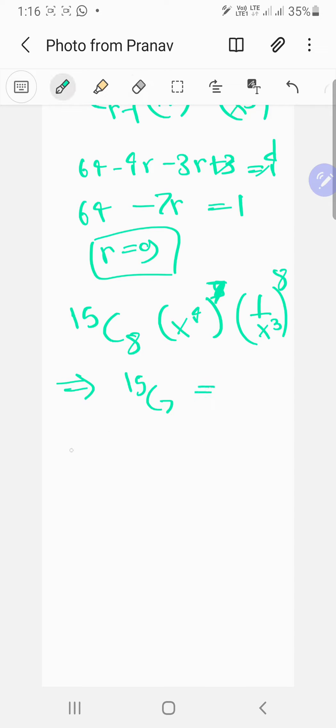So that's gonna be equal to (15 × 14 × 13 × 12 × 11 × 10 × 9 × 8) upon (7 × 6 × 5 × 4 × 3 × 2). Yeah, so this 8 is not required.